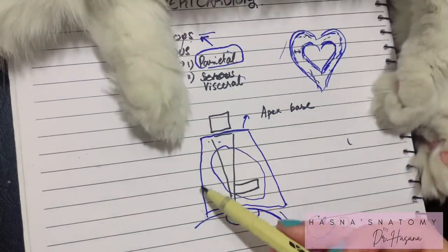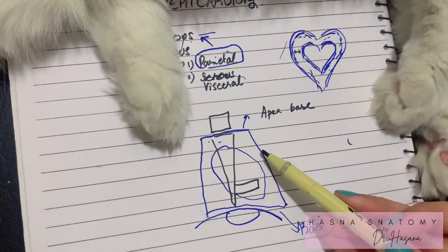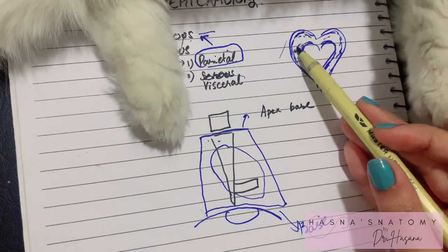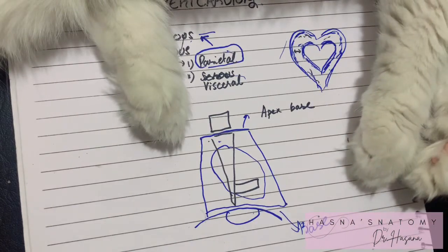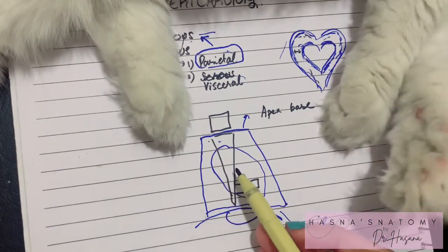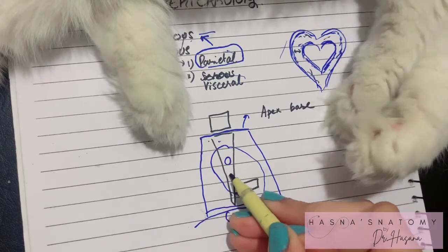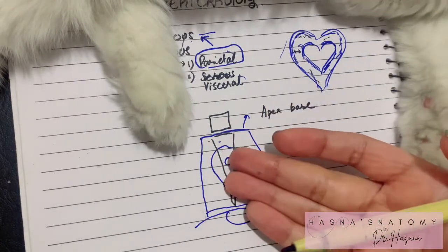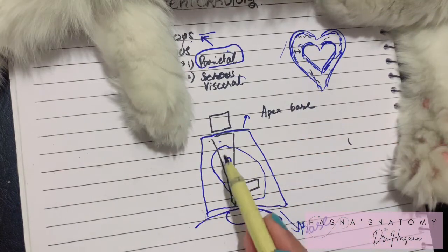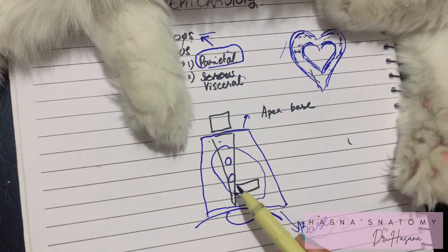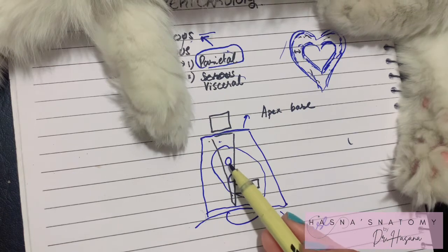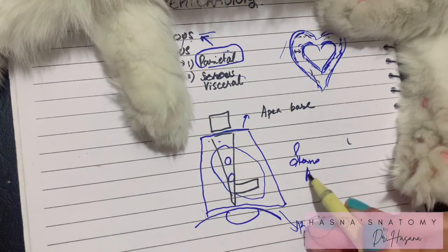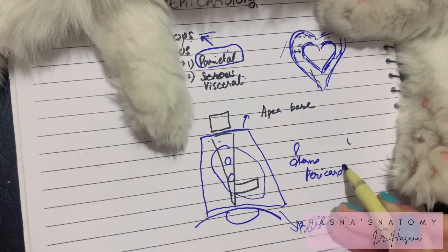The function of the fibrous pericardium is to prevent overfilling and over-expansion of the heart, so that the heart expands only within the pericardial cavity. Anteriorly, the fibrous pericardium is connected to the sternal body via weak ligaments known as the sternopericardial ligaments, which form part of its anterior relations.